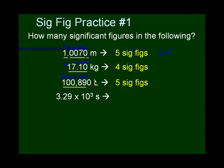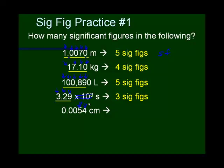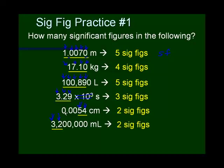This number is in scientific notation — we'll discuss that more in the next lecture. With scientific notation and significant figures, you don't need to worry about the 'times ten to the whatever' part; just look at the number in front. Here all those numbers are significant: three sig figs. For 0.0054: the five and four count, but the other three zeros are leading zeros and never count — just two significant figures. For 3,200,000 milliliters: the 3 and 2 count, but five trailing zeros with no decimal point don't count — only two significant figures.